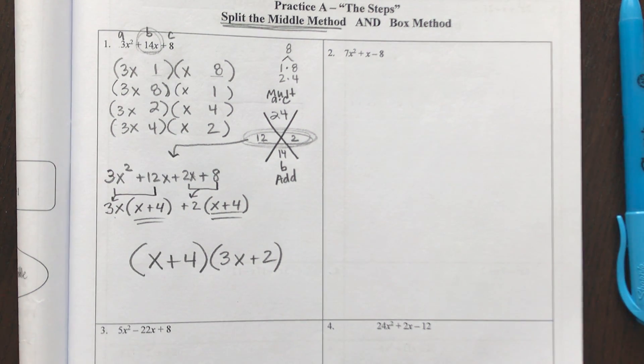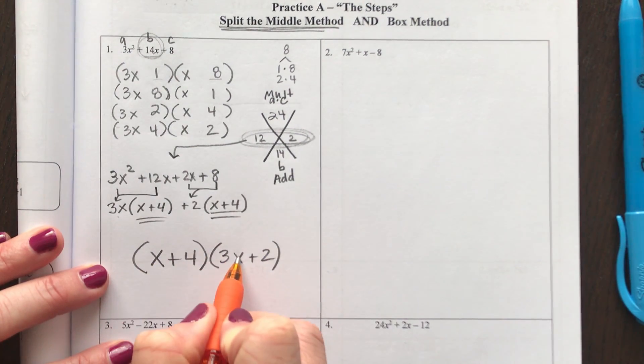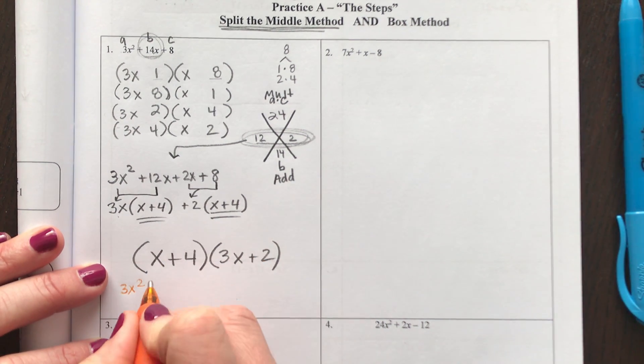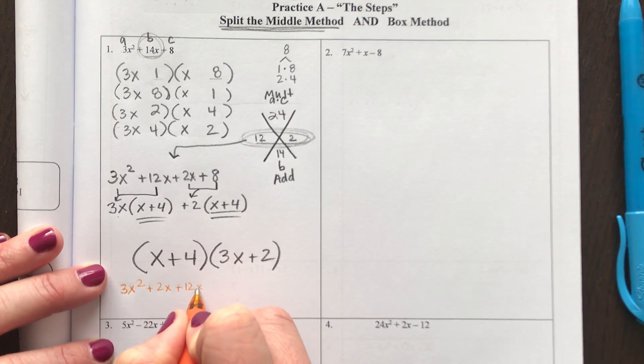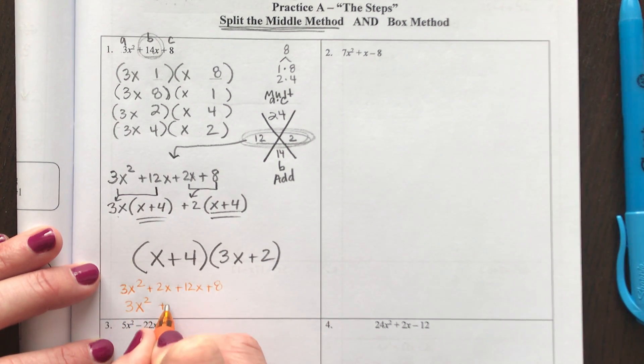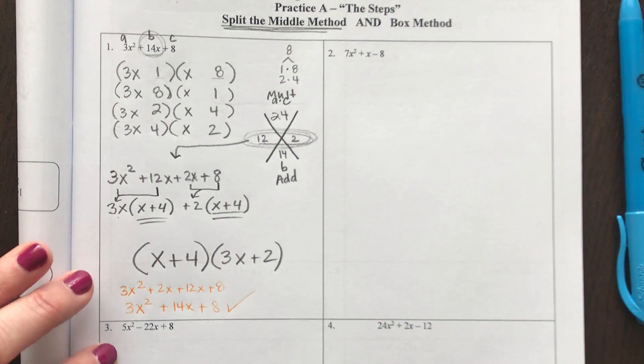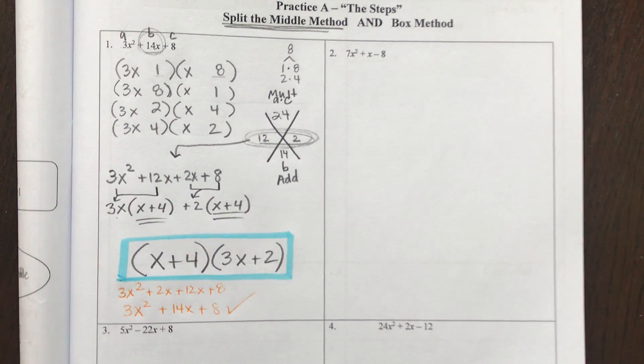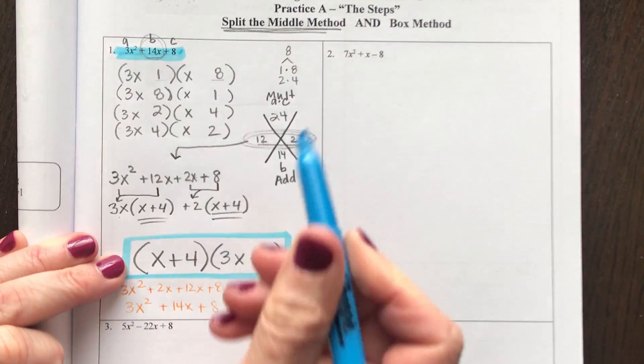Now I want to check with you. I'm going to check my answer and prove that we do get what we started with. x times 3x is 3x². x times 2 is 2x. Now 4 times 3x is 12x and 4 times 2 is 8. Does this combine to make what we started with? Yes, it does. So this is the two factors that multiply to make my original polynomial 3x² + 14x + 8.